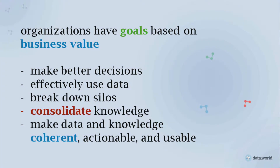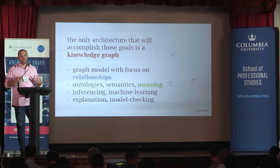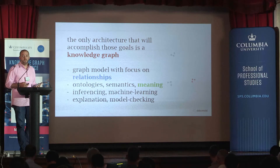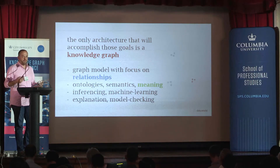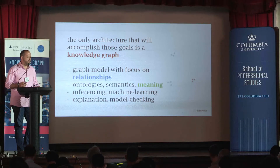Organizations have goals around data management based on business value — they want to make better decisions, effectively use their data, break down silos, consolidate knowledge, make their data more actionable, coherent, and usable. Nowhere in there is 'I want a knowledge graph for a knowledge graph's sake.' But we fundamentally believe the only architecture that will achieve that at scale requires a graph model focusing on relationships, ontologies and semantics, inferencing and machine learning, leading to better outcomes in explainable AI.